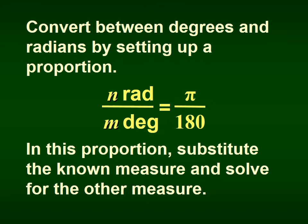We can convert between degrees and radians using a proportion: the number of radians over the degree measure equals π over 180. We substitute the known measure and solve for the other. Think of it this way — π goes with radians, 180 goes with degrees. Whatever unit you have, put it in the matching position, then cross-multiply to solve.